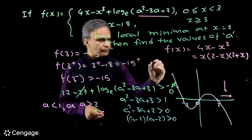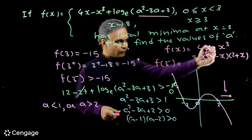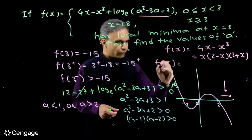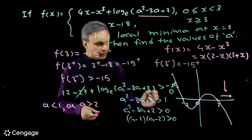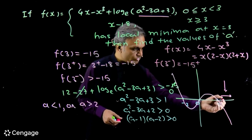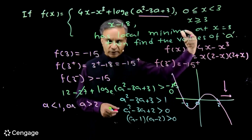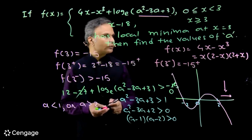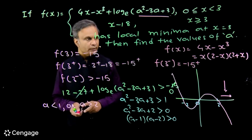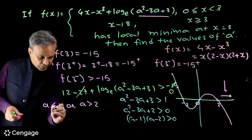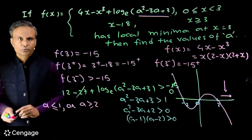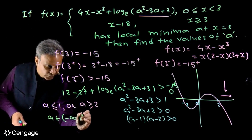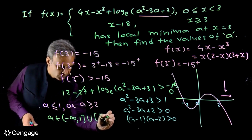Putting x=3 into 4x−x³ gives −15, so f(3−) approaches −15 from above since the function is decreasing there. Therefore x=3 is still a point of local minimum for a=1 and a=2. The complete set of values is a ≤ 1 or a ≥ 2, i.e., a ∈ (−∞, 1] ∪ [2, ∞).